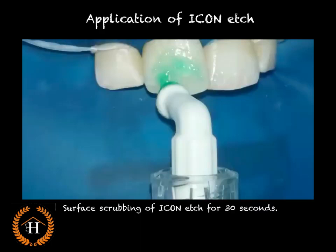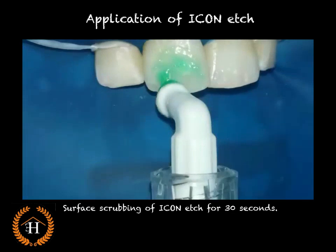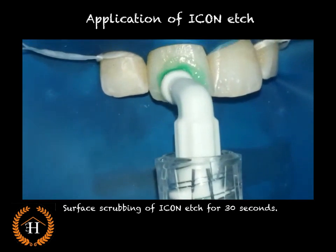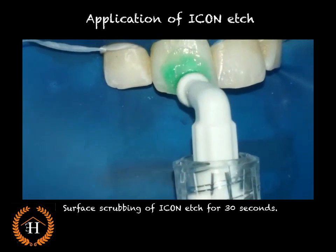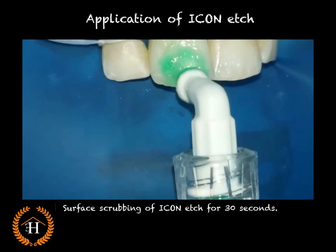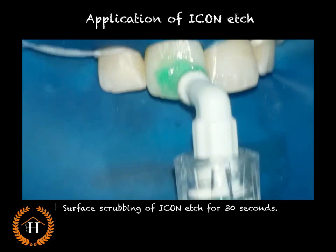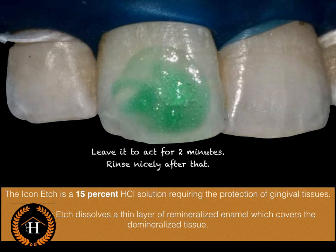Icon-H is the first step. It is activated onto the surface for about 30 seconds. It's available in a syringe with a dispenser, so all we have to do is gently scrub for about 30 seconds on the lesion and slightly beyond it. Once that is done, we leave it for two minutes to act.